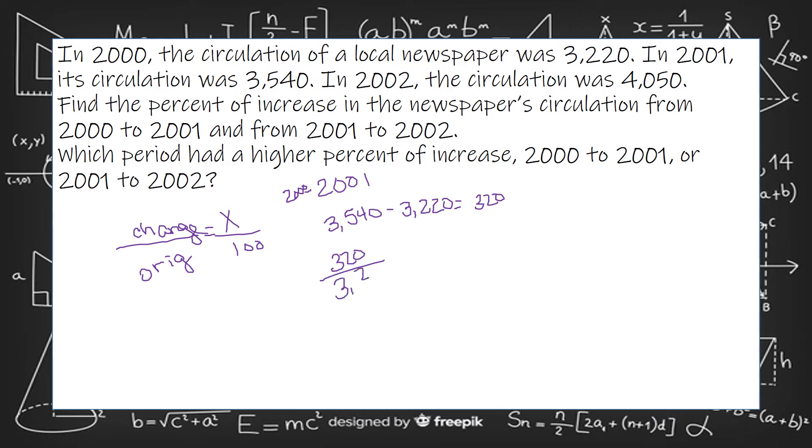The original is what it started out with, equals X over 100. So we're going to cross multiply 320 times 100.